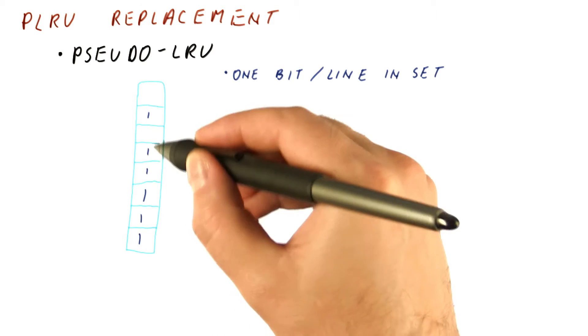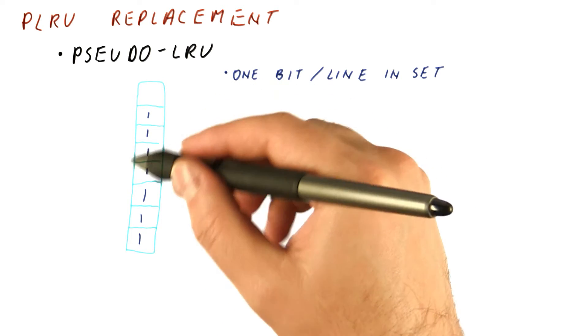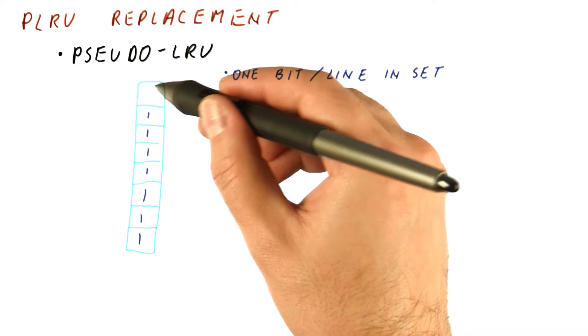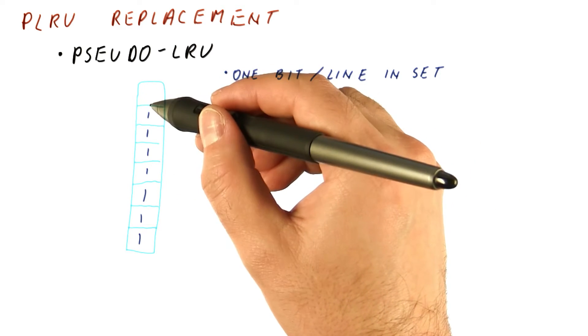Eventually, however, if we have a lot of hits, in this particular state, we will pick the least recently used block because it's the only one that has a zero bit.